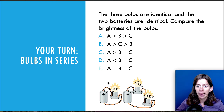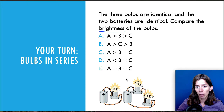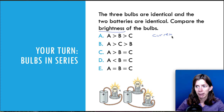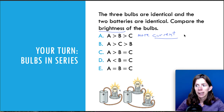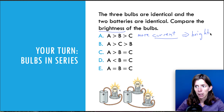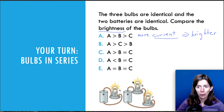Before we can do that, we need to understand what is going to affect the brightness of bulbs. If they are identical, then the only thing that matters is the current. More current means it's going to be brighter. So you have to think about how much current is going through, and that's going to affect the brightness.